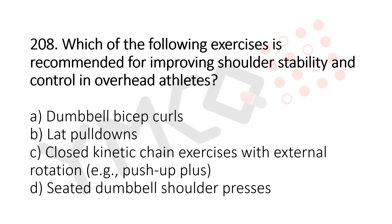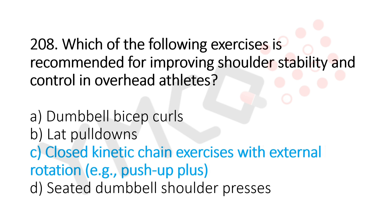Question 208: Which of the following exercises is recommended for improving shoulder stability and control in overhead athletes? Option A: dumbbell biceps curls. Option B: lat pulldowns. Option C: closed kinetic chain exercise with external rotation, such as push-up plus. Option D: seated dumbbell shoulder press. The answer is option C, closed kinetic chain exercise with external rotation.